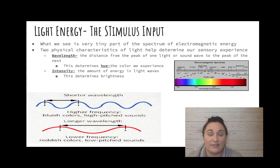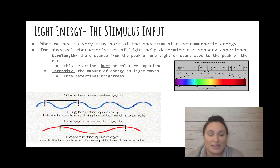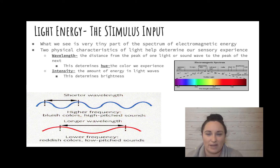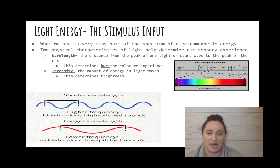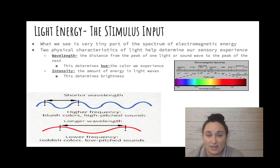First we need to talk about the physical stimulus that your eye receives and processes. What we see is actually a very tiny part of the electromagnetic spectrum. If you look over on the right, there's an image that shows you the electromagnetic spectrum — gamma rays, short waves like AM waves — and in the middle is the amount that we can see, magnified below to show you the visible light spectrum.